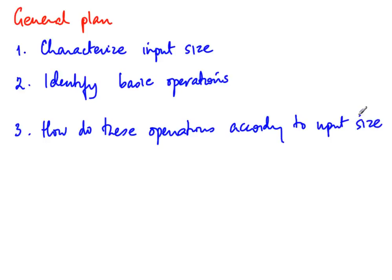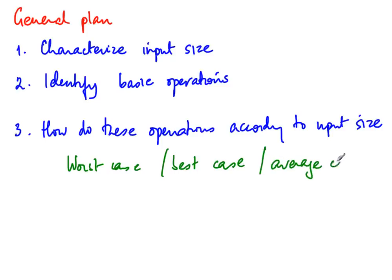In some cases the number of operations is always the same for a given input; in other cases it may be conditional. In our example, the conditional check A[i] > maxVal occurs in every loop iteration, so it happens n-1 times. But the assignment maxVal = A[i] happens only if the condition succeeds. If we have conditional operations, we must be careful about worst case versus best case. The worst case is when the condition always succeeds — for example, an array in ascending order means you always update maxVal. Unless stated otherwise, we assume worst case, since it is usually the one of interest and relatively easy to estimate.